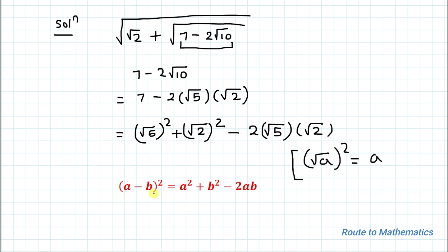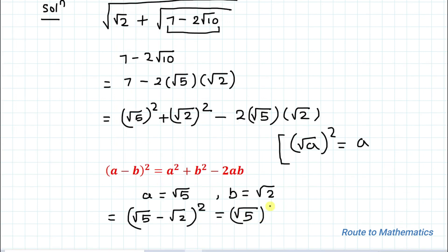Now we will apply this algebraic identity here. If I take a as root 5 and b as root 2, so I can write this as root 5 minus root 2 whole square, that is nothing but root 5 square plus root 2 square minus 2 root 5 multiplied with root 2.